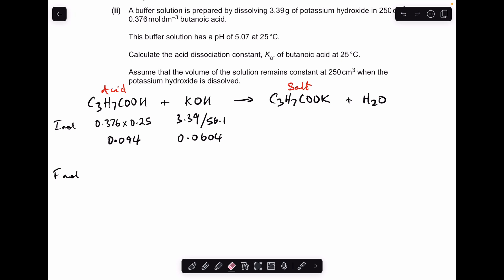So next thing I need to do is work out the final moles, so that's the moles of everything at the end of the reaction. You can see straight away that the KOH will go to zero because there's fewer moles of that. That will mean that we get 0.0604 moles of salt made because of that one to one ratio. We get 0.0604 moles of water as well but I'm not really interested in that.